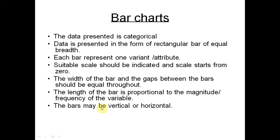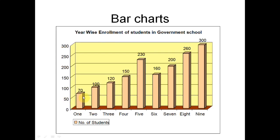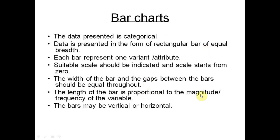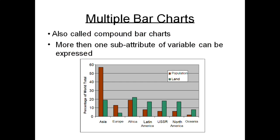Bar charts can be vertical or horizontal. The length of the bar is directly proportional to the magnitude of frequency of the variable — a bar reaching 70 is shorter than one reaching 300. Bar charts can also be multiple, representing two variables in a single chart. For example, representing both population and land area for continents like Asia and Europe in the same chart is called a multiple bar chart.